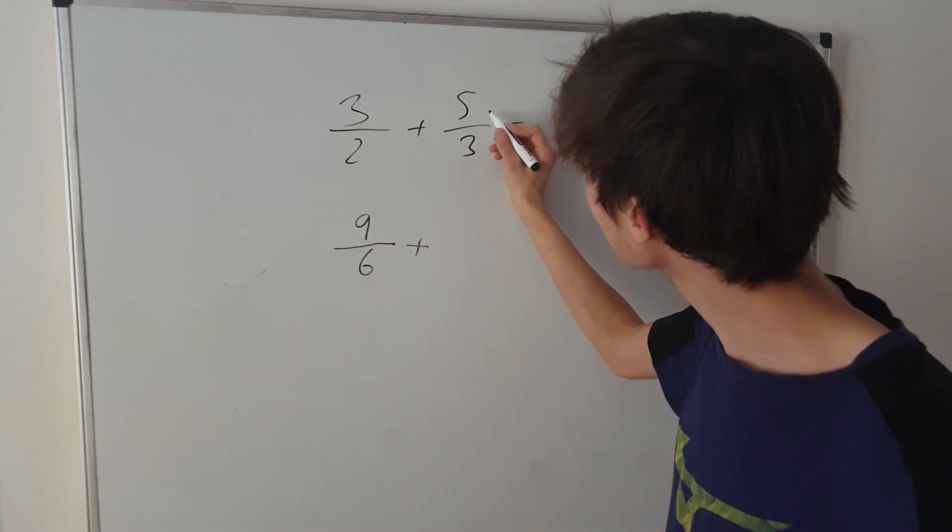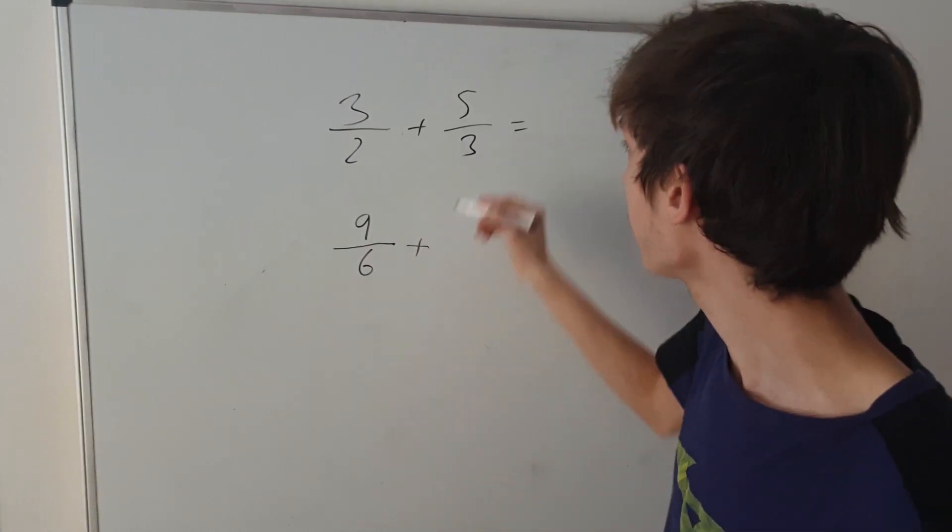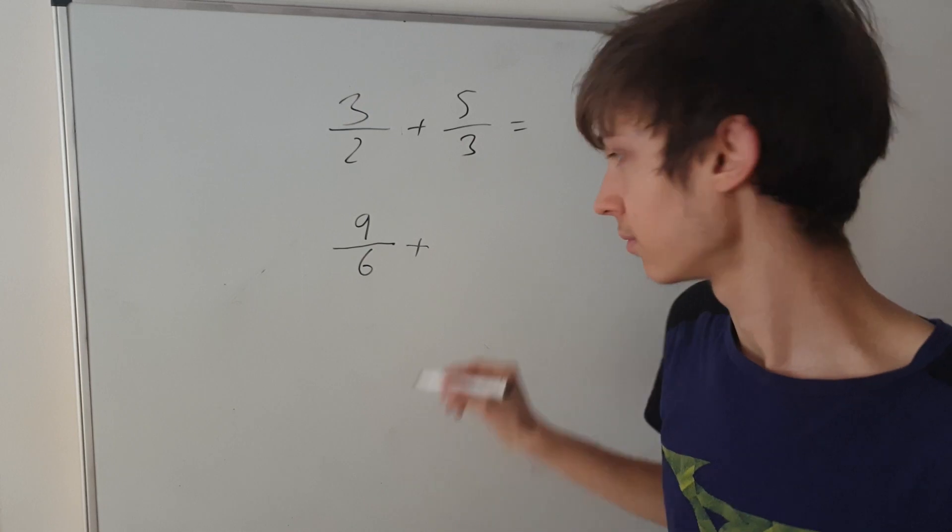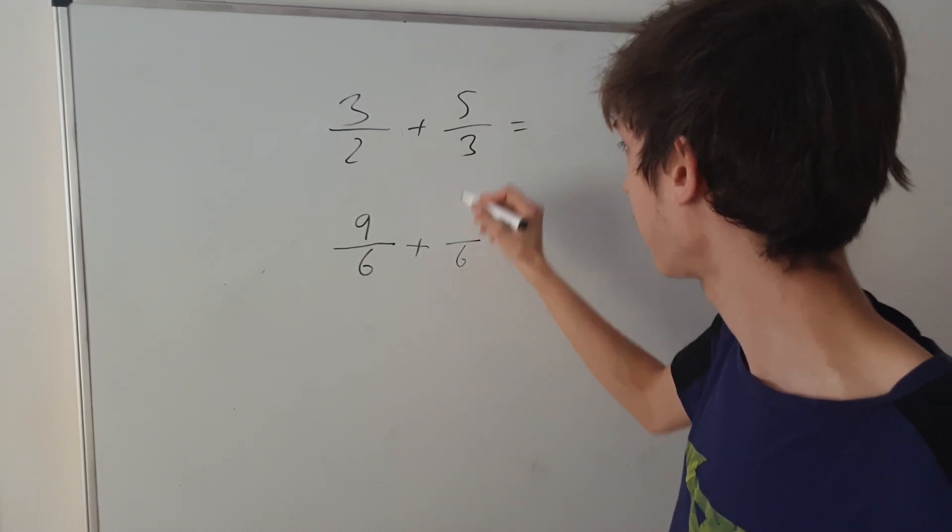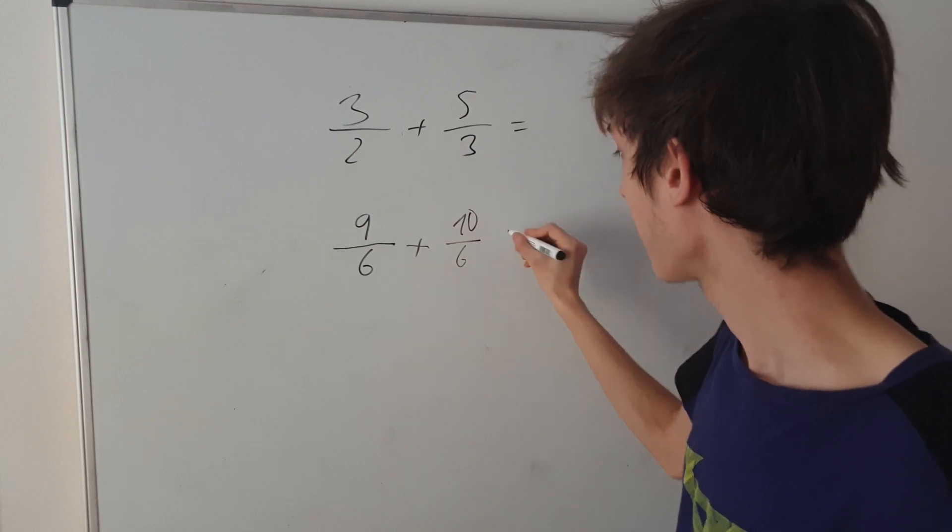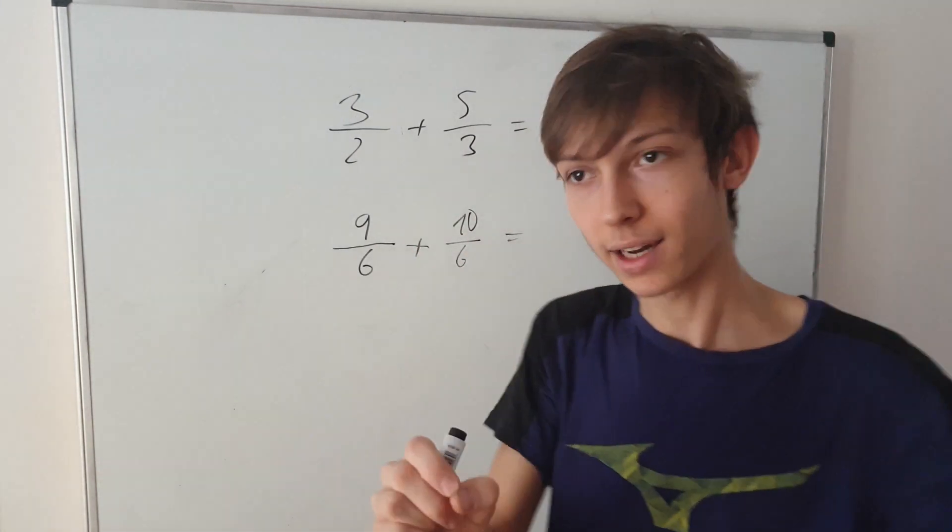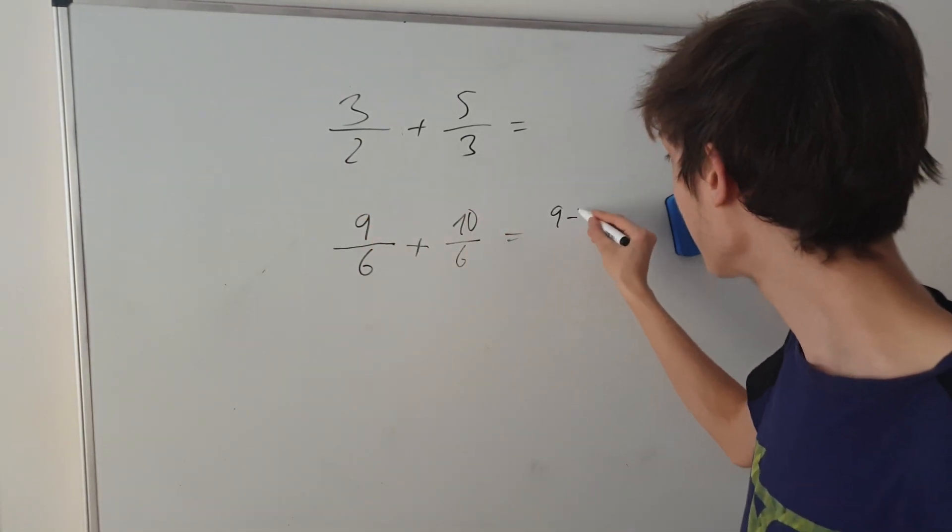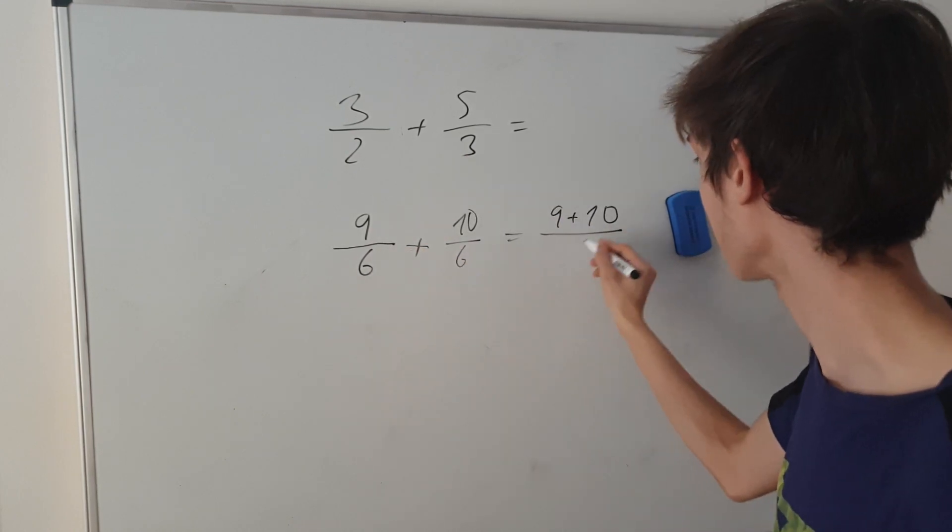And in this case, we have to get this to be 6. So, we will multiply both the upper side and the lower side by 2. Okay? 3 by 2 is 6. 5 times 2 is 10. And now that we have the same denominator, we can add up the numerators, the 9 plus 10, in a single fraction.